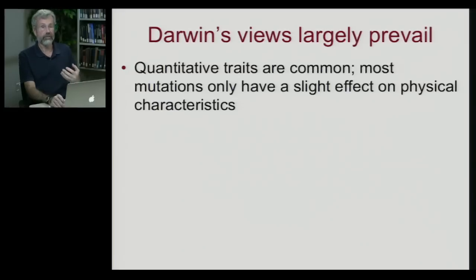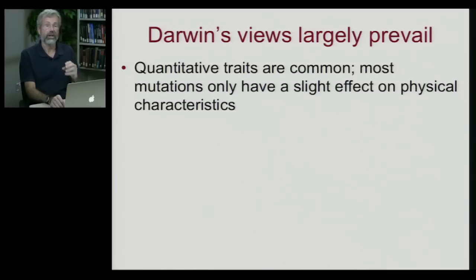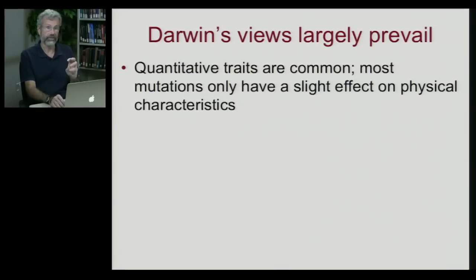To summarize Darwin and macroevolution: Darwin's original concept of gradual change is still our kind of default explanation for how traits are likely to have altered through time. And indeed, there are a lot of quantitative traits — that is, multi-locus traits — where you have lots of different loci influencing the same phenotypic trait. These traits are common and mutations on all those different loci generally do just have a small effect on physical characteristics.